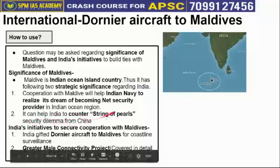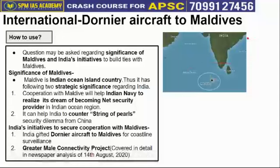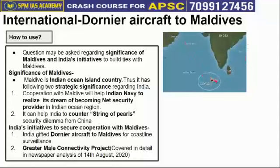The second strategic significance of Maldives is to counter the string of pearls security dilemma created by China for India. String of pearls is a security notion — never formally accepted by China — according to which China is building a series of ports along the coast of India to encircle India. For example: Kyaukphyu port of Myanmar, Chittagong port of Bangladesh, Hambantota port of Sri Lanka, Malé port of Maldives, and Gwadar port of Pakistan. By building this series of ports, China is encircling India, according to security experts.